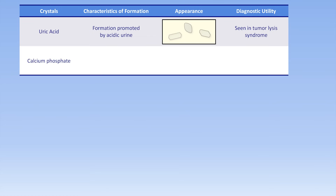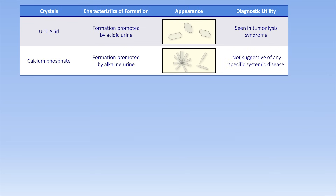Next are calcium phosphate crystals, which form in alkaline urine. These tend to be very elongated, may have one or two pointed ends, and frequently form in rosette-type structures. Although in huge quantities calcium phosphate can lead to renal stones, microscopic calcium phosphate crystals on microscopy are not suggestive of any specific systemic disease.